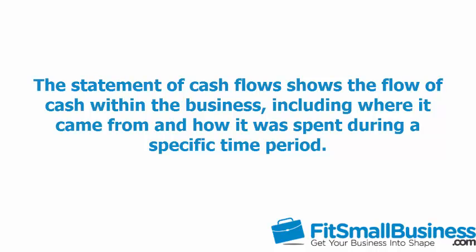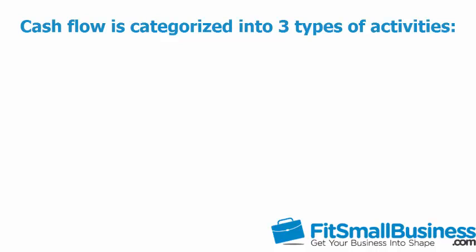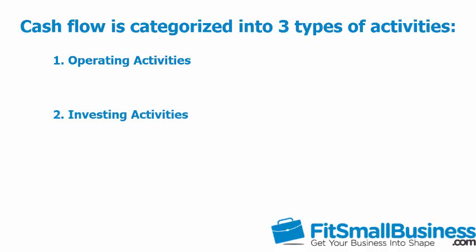The Statement of Cash Flows shows the flow of cash within the business, including where it came from and how it was spent during a specific time period. Depending on the type of transaction, cash flow is categorized into three types of activities: Operating Activities, Investing Activities, and Financing Activities.